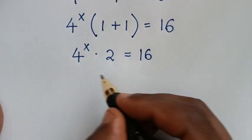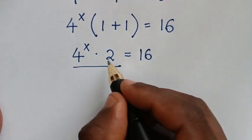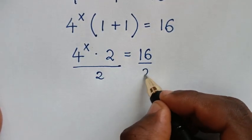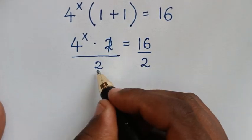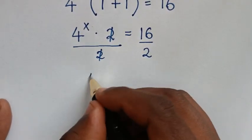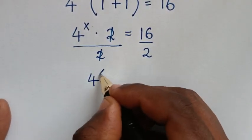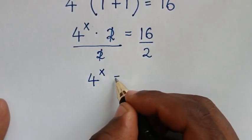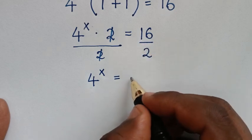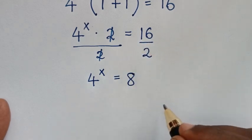We'll divide by 2 on both sides. So the 2s will cancel, and it will be 4 power x is equal to 16 divided by 2, which is 8.